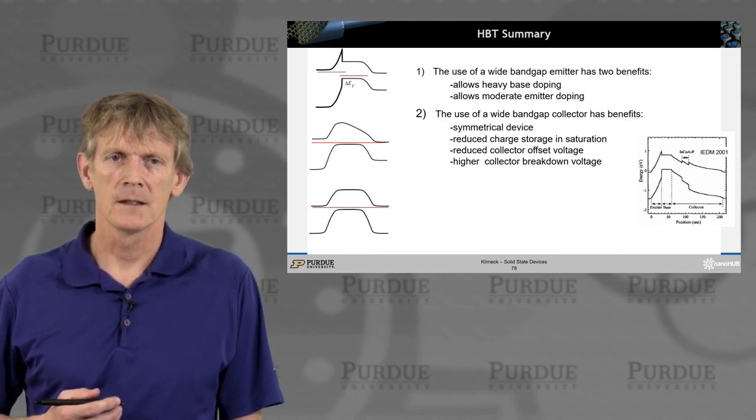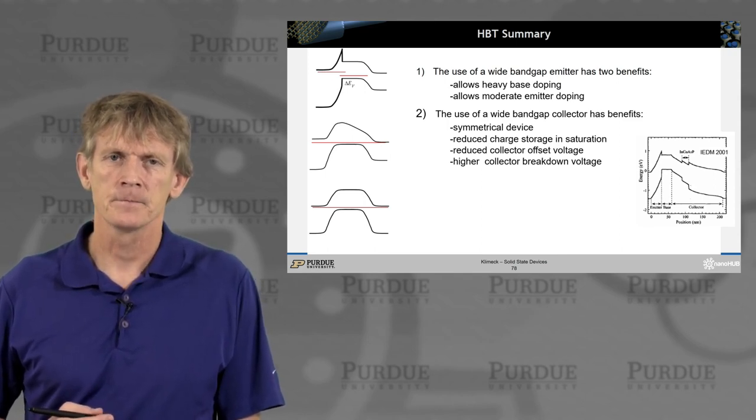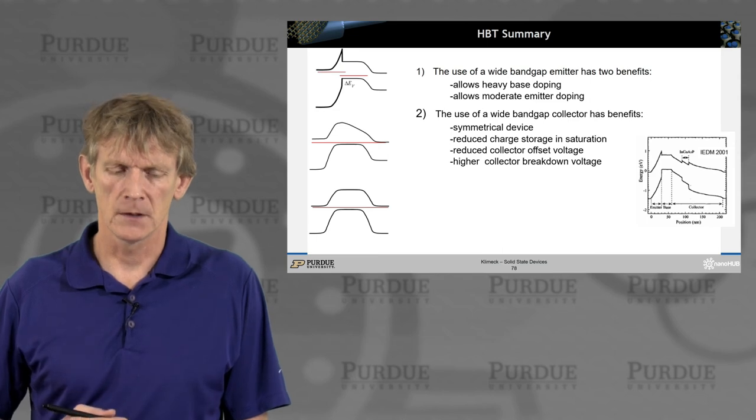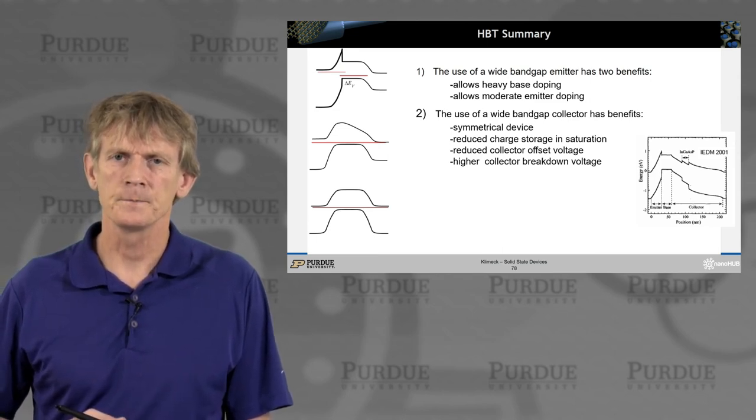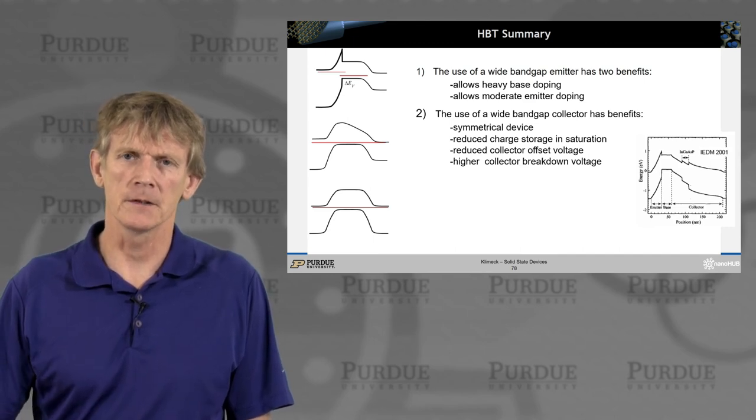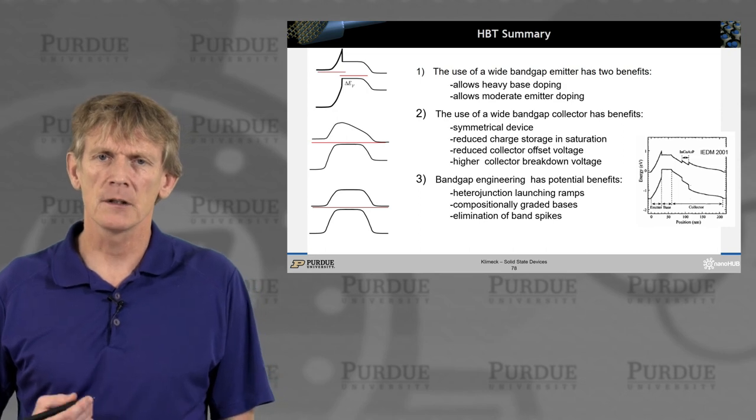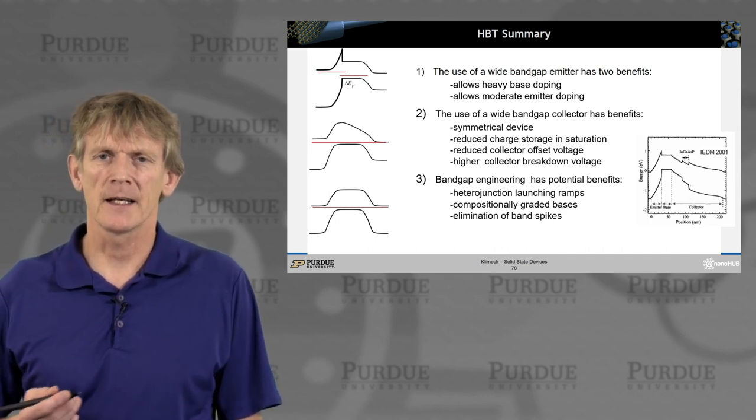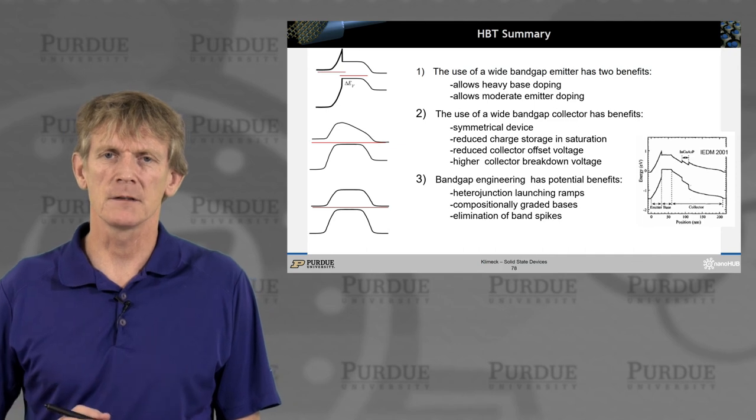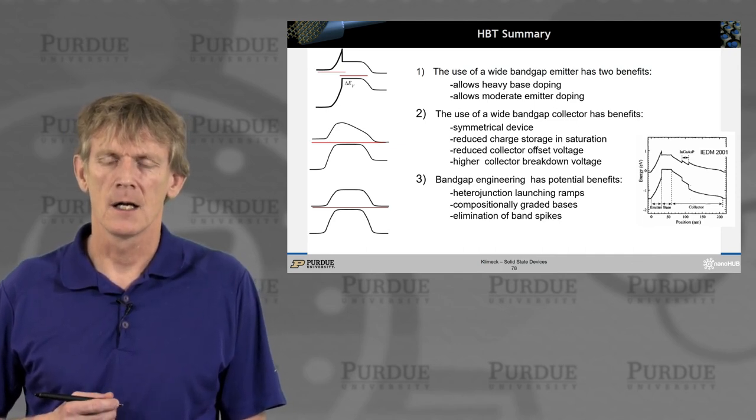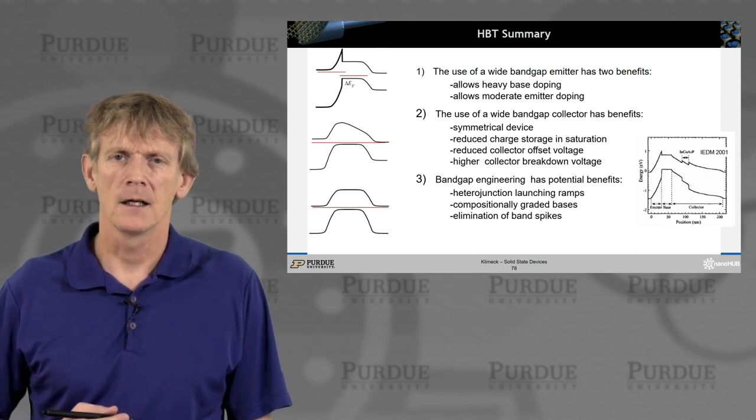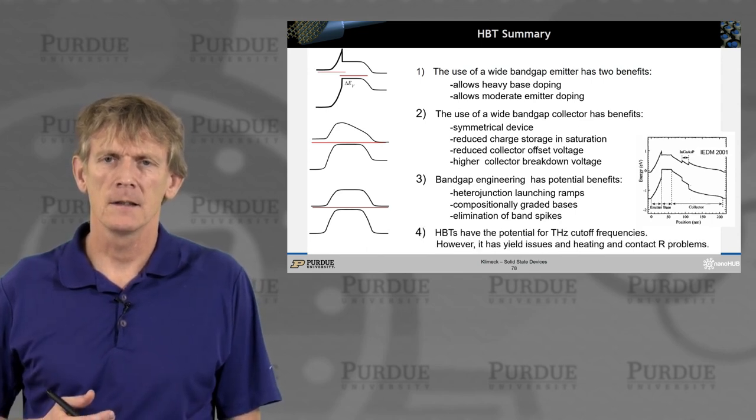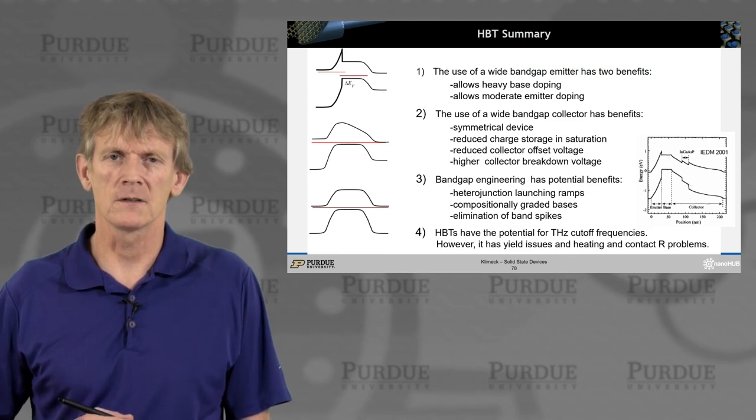If you have a wide bandgap collector, you can ramp up voltages there on the base collector junction. That means you have less avalanche, you can run more power, you can increase the current, you don't lose the collector breakdown, and you have a symmetric operation if you so choose. And you can build fascinating, complicated bandgap engineered devices, where you have potential landscapes that are interesting, where you build launcher ramps for electrons. You can grade the base, you can eliminate the band spikes, or introduce some if you need some.